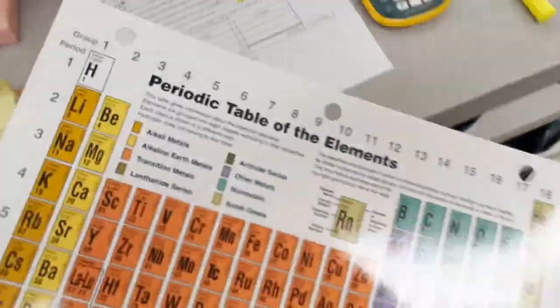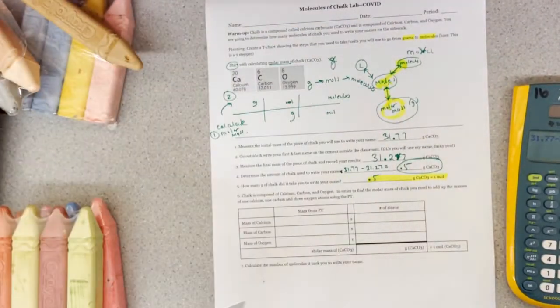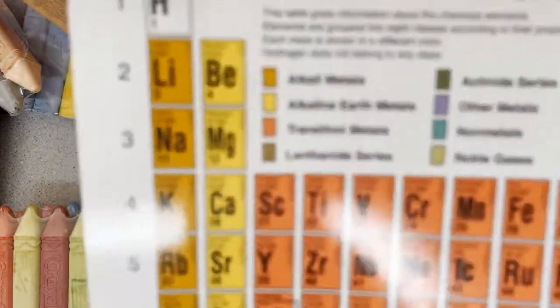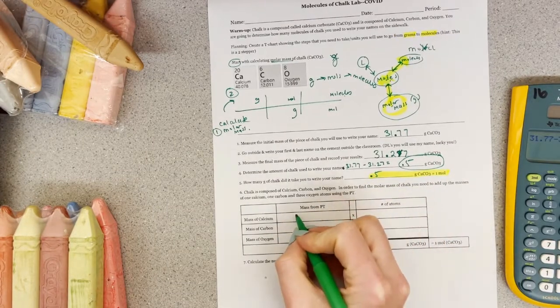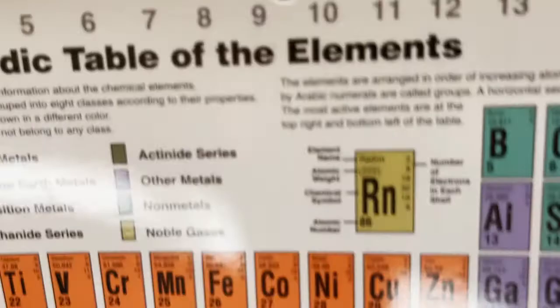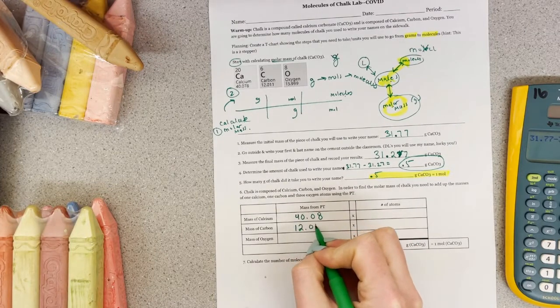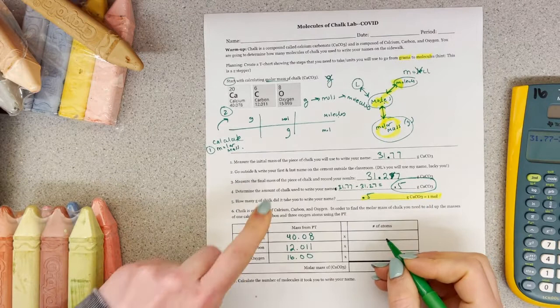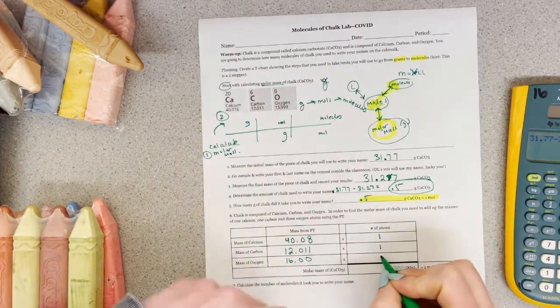Okay, so calcium is 40.08. You can see that. 40 point. Okay, so mass from the periodic table is 40.08, right there. And carbon is 12.011. And then oxygen is 16.00. Okay, and then we have our calcium. We've got one of them. Carbon, one of them. Oxygen, we've got three of them.